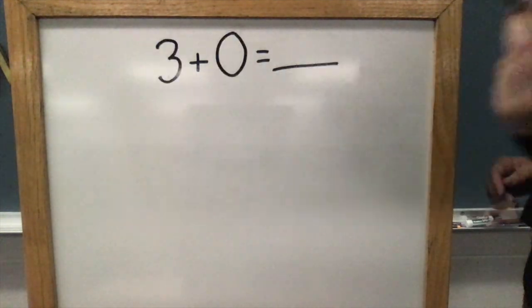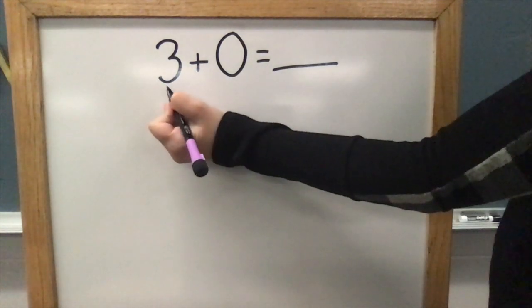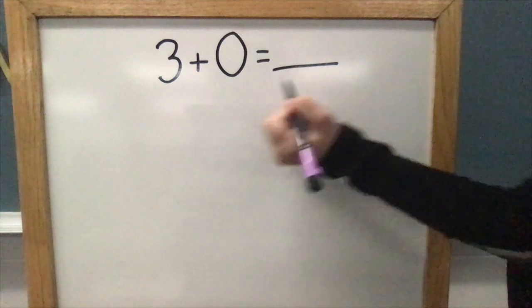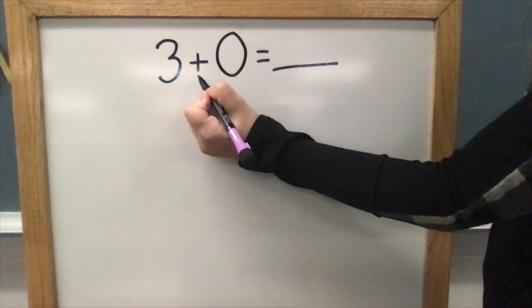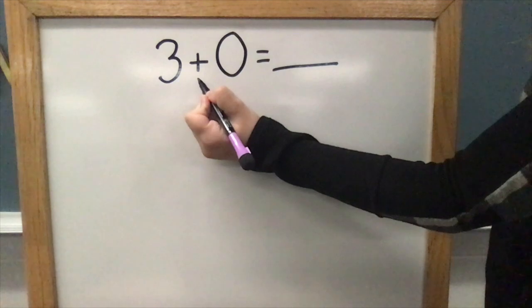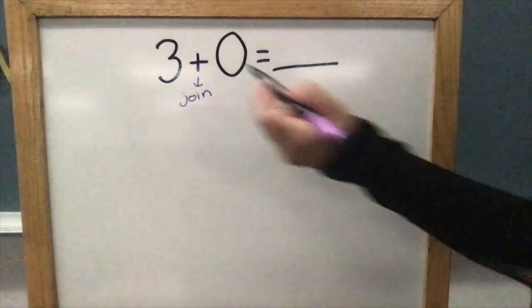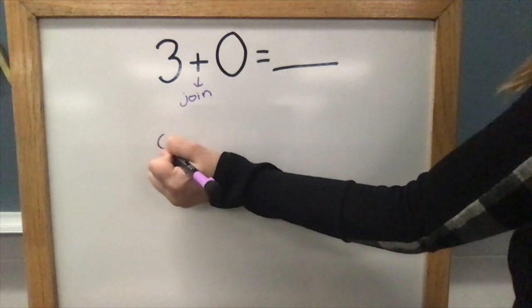Let's try another one. Our next equation says three plus zero equals. Do you remember what the plus sign means? You're right, it means join. So, to solve this equation, I'm going to start by drawing a group of three.